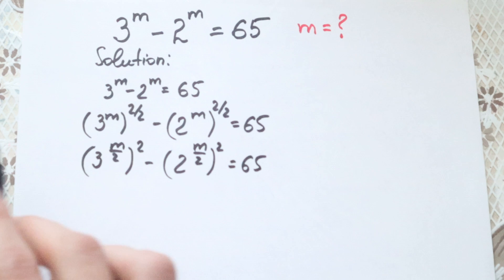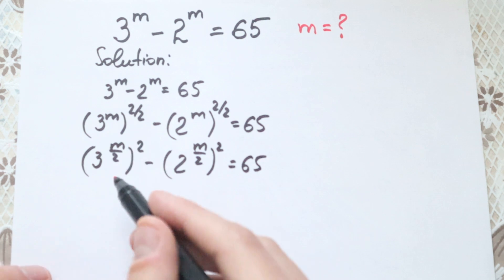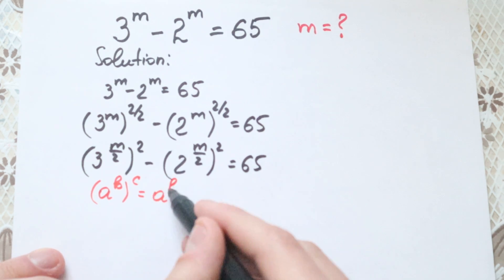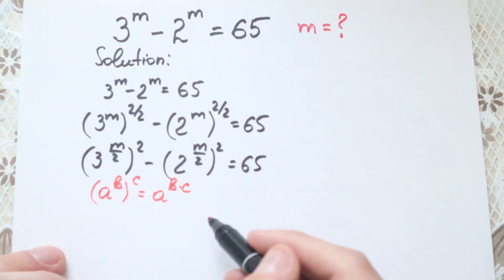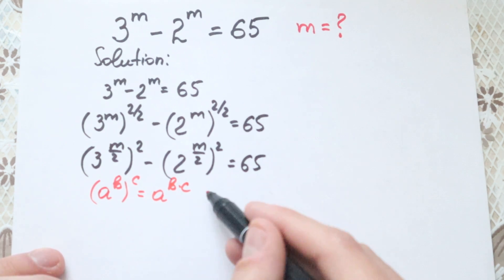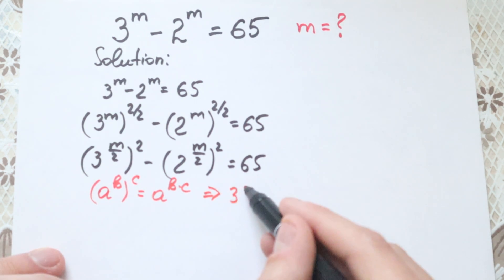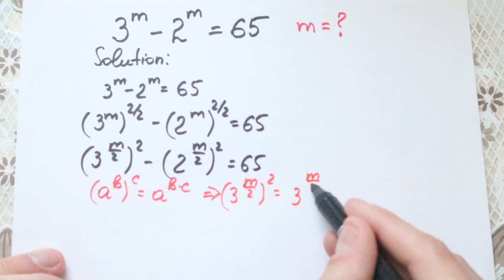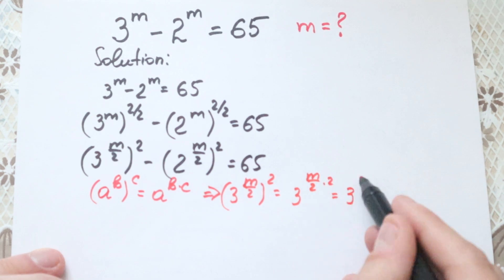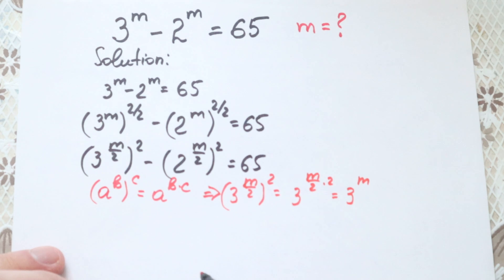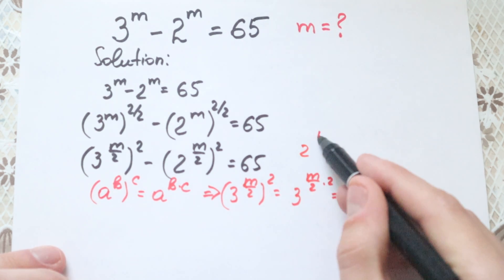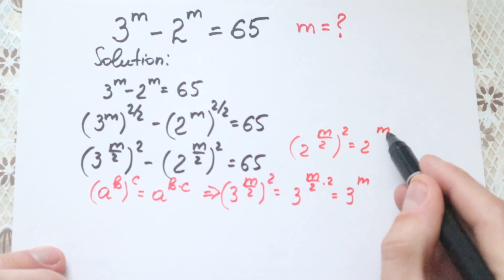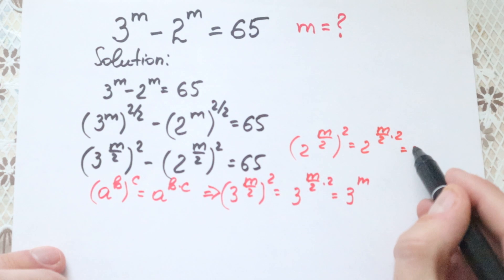Why is this correct? Because of the math property: if we have a to the power b raised to the power c, we can write it as a to the power b times c. So 3 to the power m over 2, raised to the power 2, equals 3 to the power m over 2 times 2, which equals 3 to the power m — the same as in the beginning. The same applies to 2 to the power m over 2 squared.